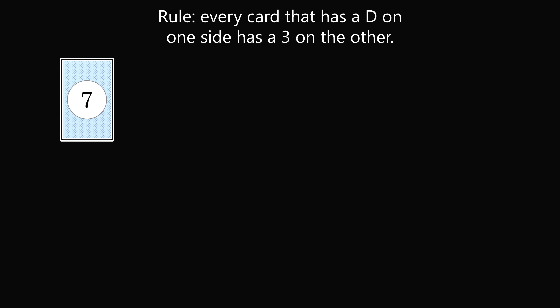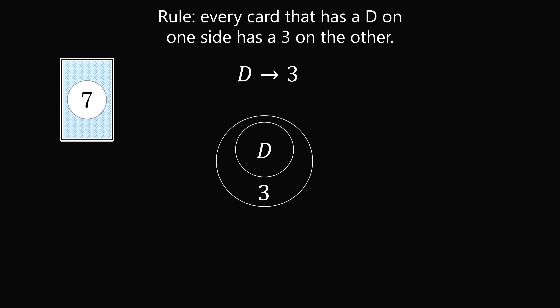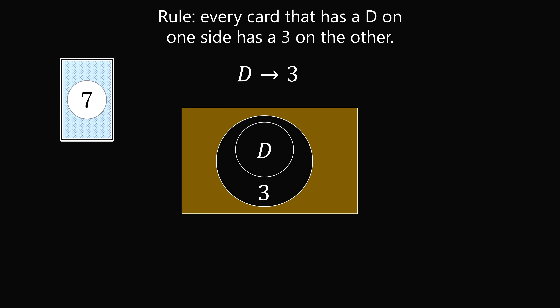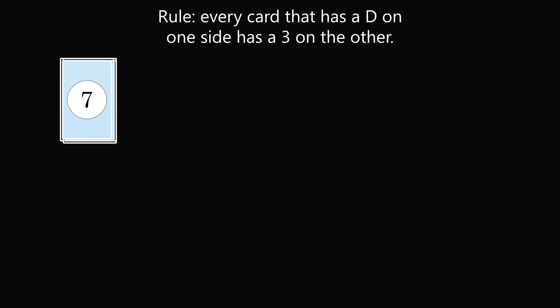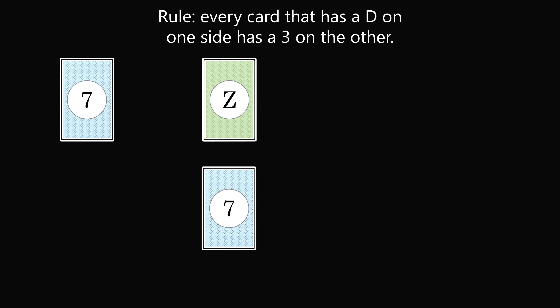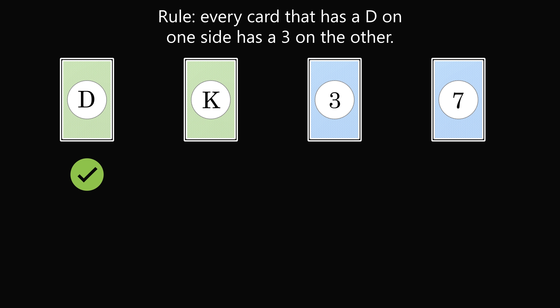Now, what about the card with the 7? Consider the entire sample space and the area that is not 3. If we have not 3, that will definitely be not D — this is the contrapositive of if D, then 3. Now 7 is a number that is not 3, so if 7, then not D. We definitely need to check the 7 card to make sure it does not have a D. If we flip it and there's no D, that's fine. But if there is a D, this would violate the rule, because we'd have a card with D that does not have a 3 on the other side.